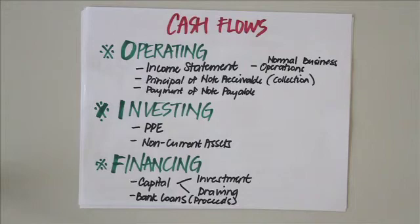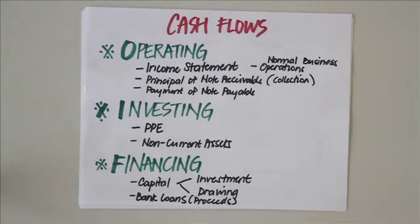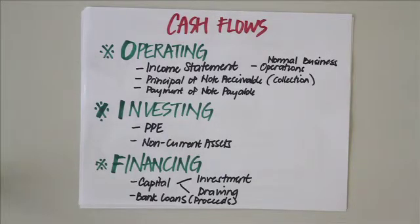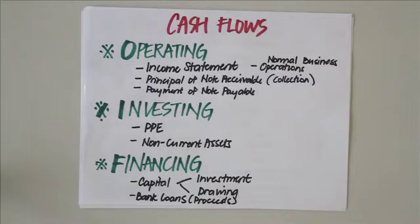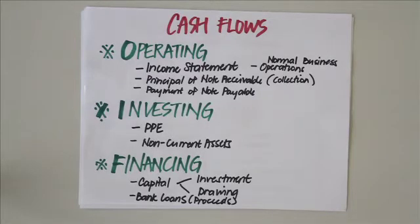Operating activities include transactions reflected in the income statement — transactions which are part of normal business operations. Ask yourself: does this transaction appear on the income statement? Is it related to revenues or expenses? Is it part of normal business operations on a routine basis? Examples include sales, purchases of supplies and inventories, or payment of bills. Cash receipts from operating activities include collections from customers, interest and dividends received, and other receipts from operations. Cash payments include payments to suppliers, payments of interest, payments of income taxes, and other operational expenditures.